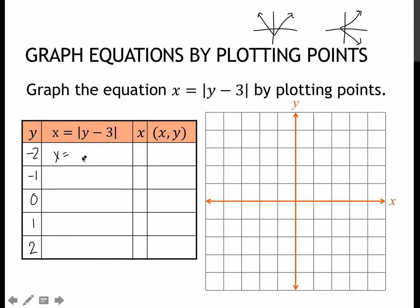So to find x, I'm taking negative 2 minus 3, which is negative 5, but the absolute value makes it positive 5. But remember, that's not negative 2, 5. That's 5, negative 2. So 5, negative 2.